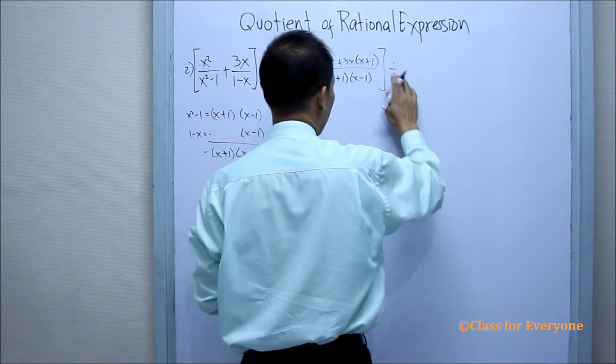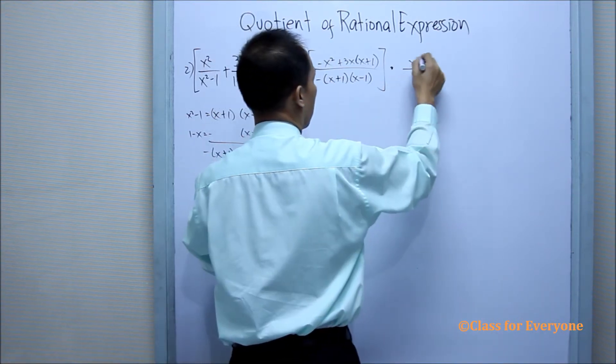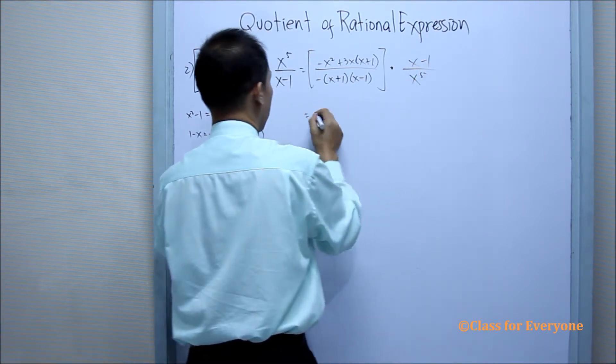And then divided by, we can now multiply, multiply by the reciprocal, x minus 1 over x to the fifth.